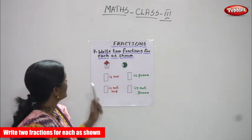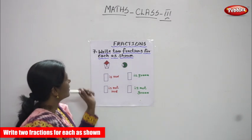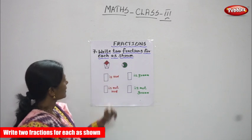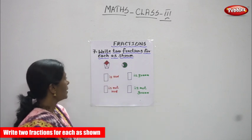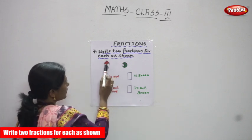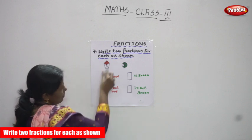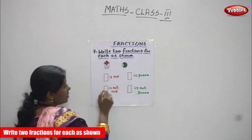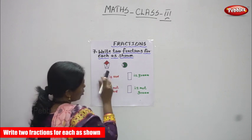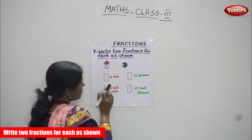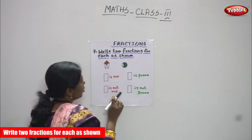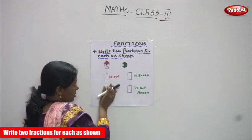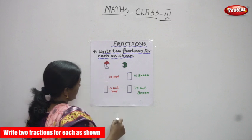We are going to see the seventh subdivision — two fractions for each, as shown. Look at these two diagrams. 1, 2, 3, 4, 5 — this is a pentagon diagram, almost similar to a pentagon. Because it has five parts, we can call it a pentagon diagram. This is a circle. First we have to discuss about the pentagon diagram.